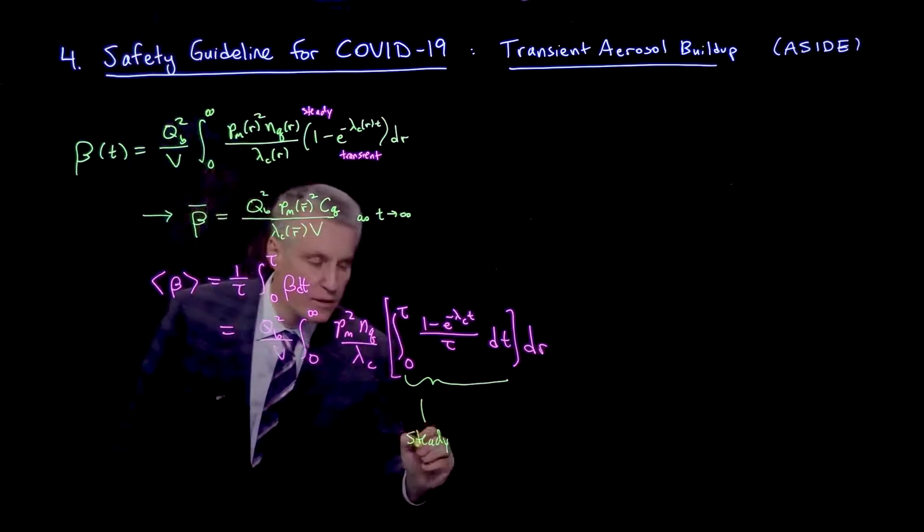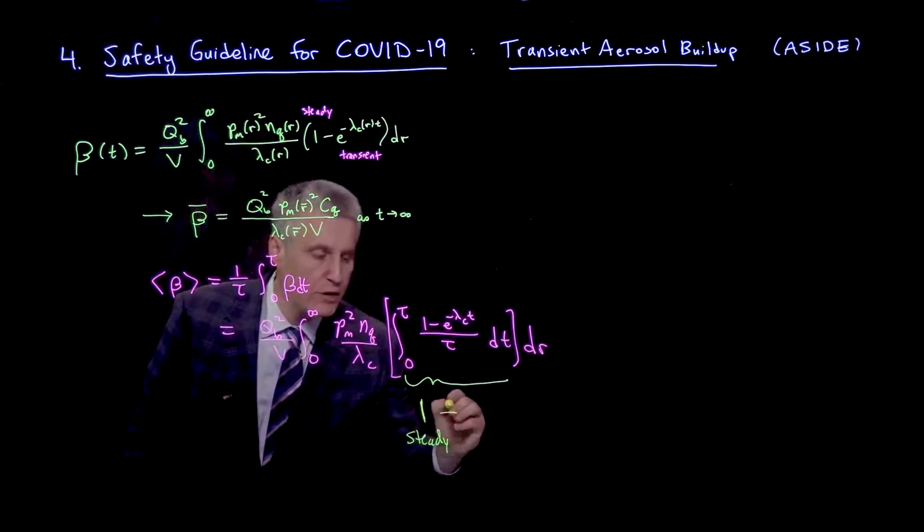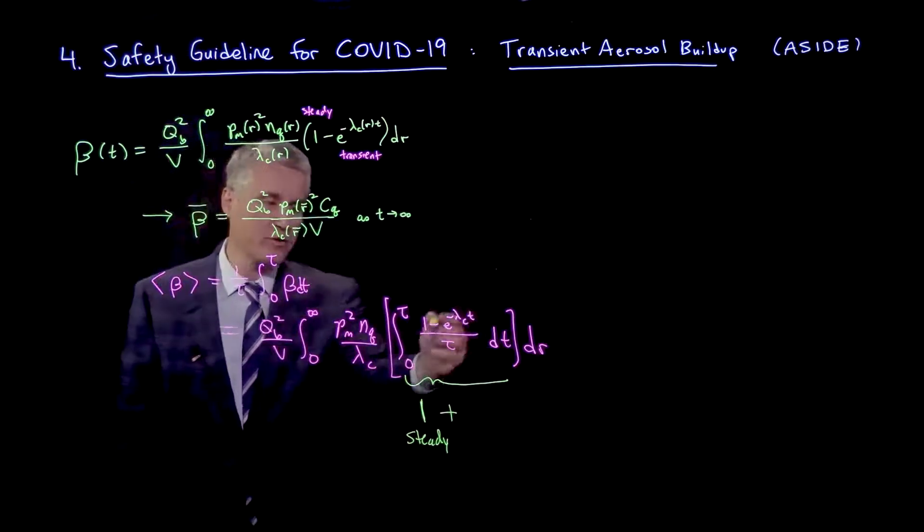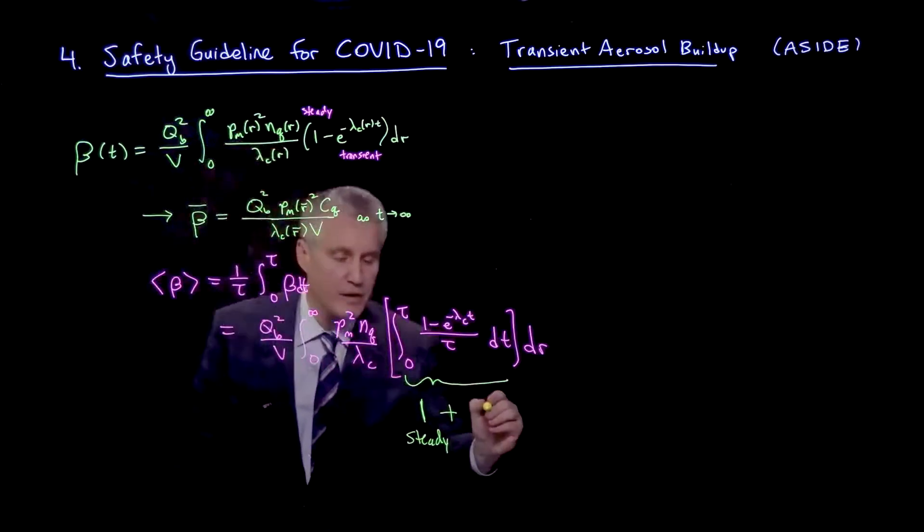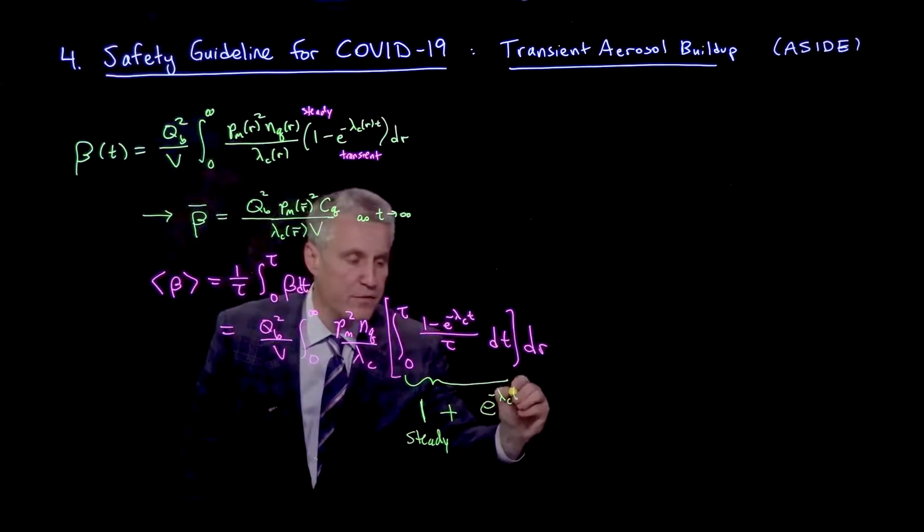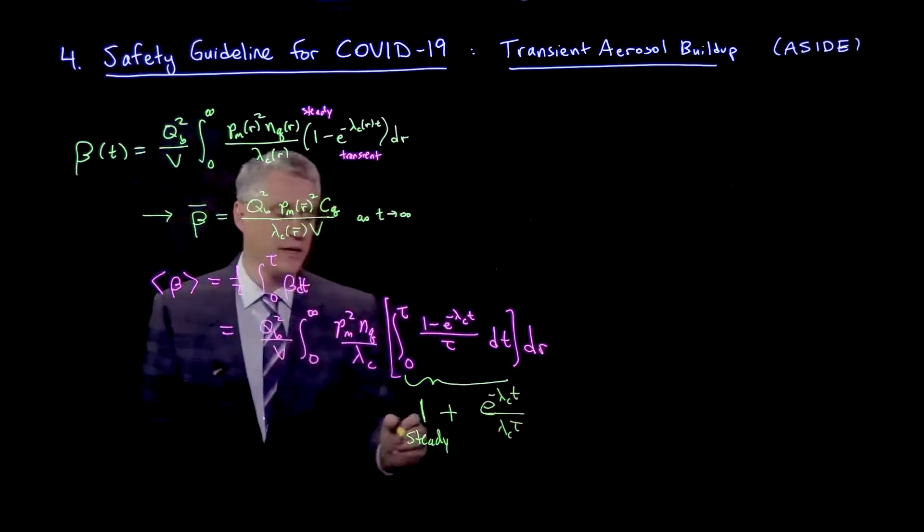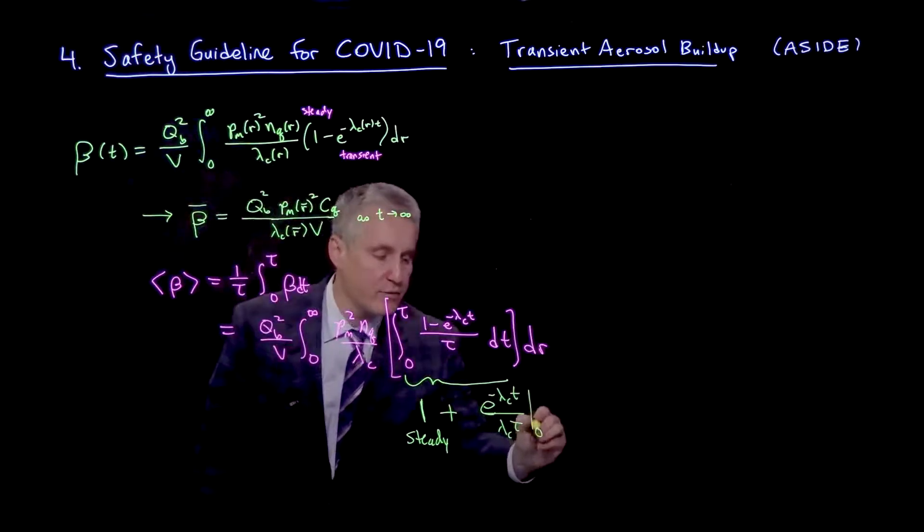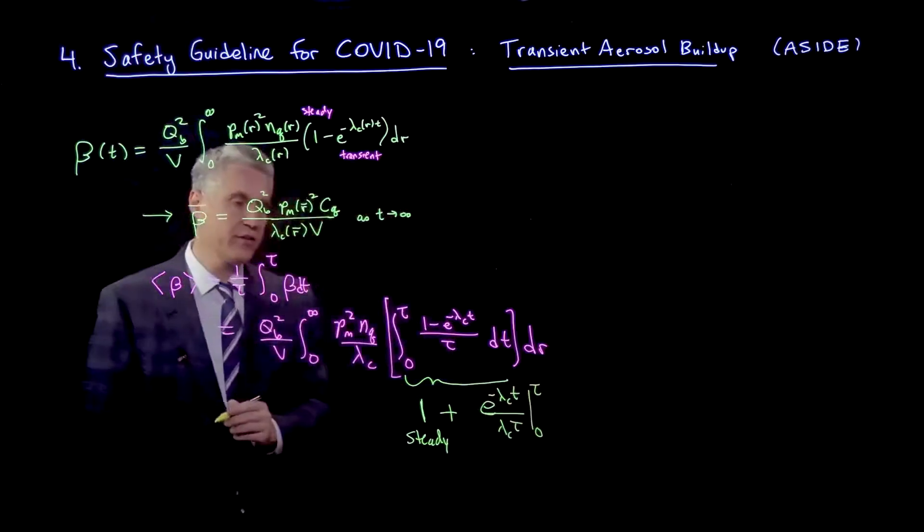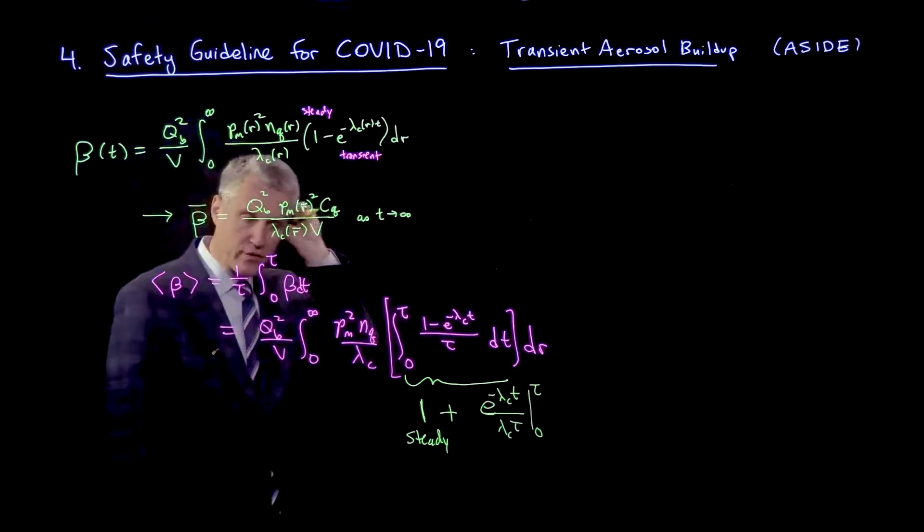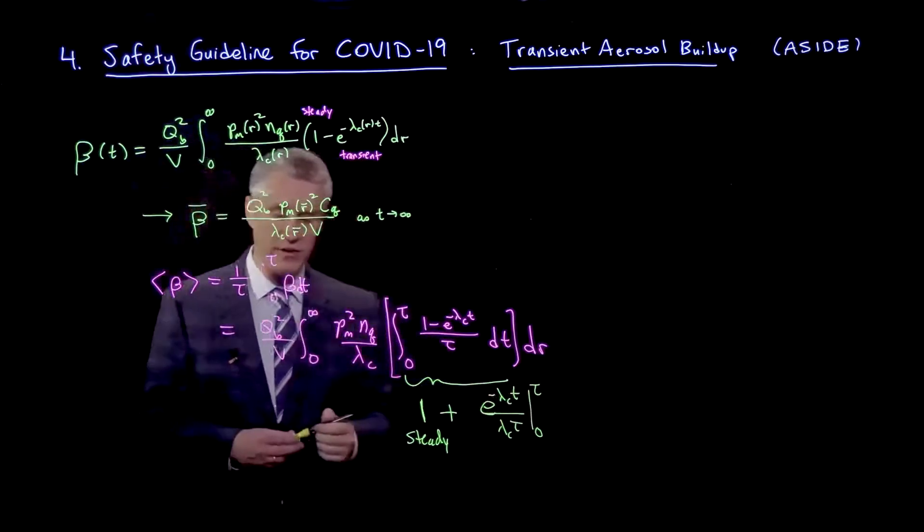1 plus, and there's a transient contribution, where I have to do this integral here. So that's e to the minus lambda c of t over lambda c tau, evaluated from 0 to tau. And so we'll come back to this in just a moment and evaluate that.